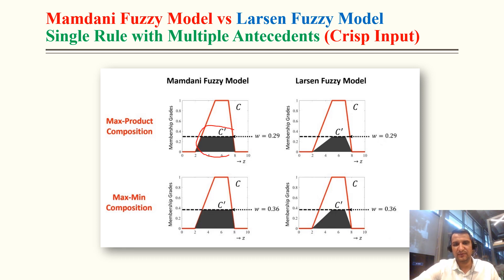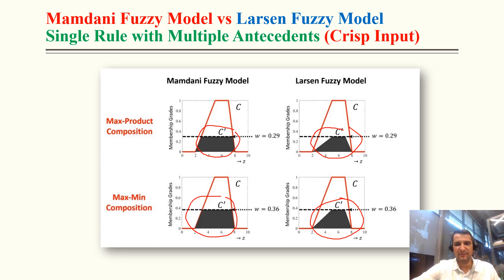The only difference between Mamdani and Larsen is the area. With max-product values 0.29 vs max-mean values 0.36 — Larsen area is always less than Mamdani.